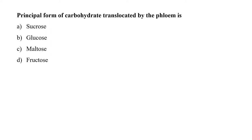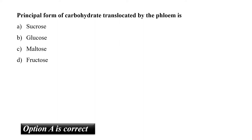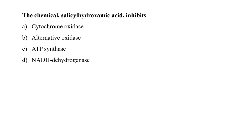The next question is: the principle form of carbohydrate translocated by the phloem is? As we all know, sucrose is the most suitable form of carbohydrate for translocation because it is non-reducing as well as chemically stable. So our correct option is A, that is sucrose.